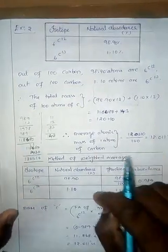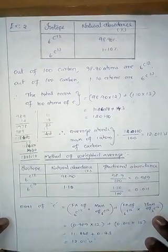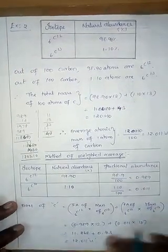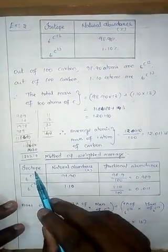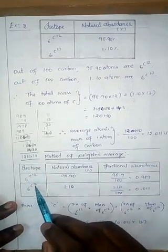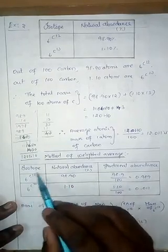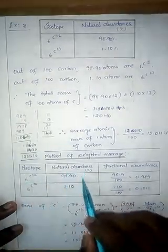So this is a very simple idea we can adopt. Now let us go to the weighted average method. So the book has given this value: isotopes six carbon twelve, six carbon thirteen, ninety eight point nine zero, one point one zero. This is the natural abundance.